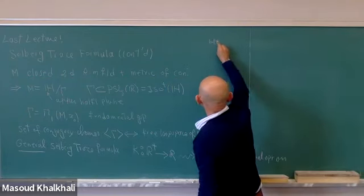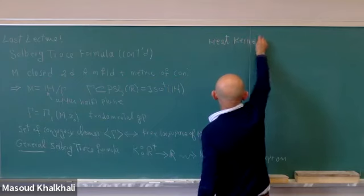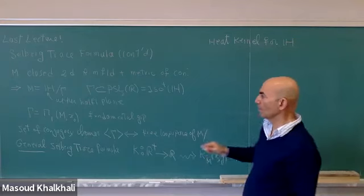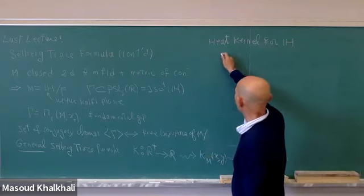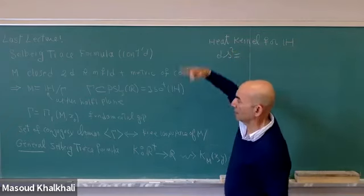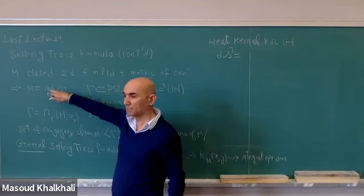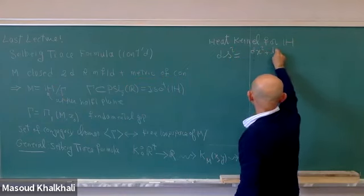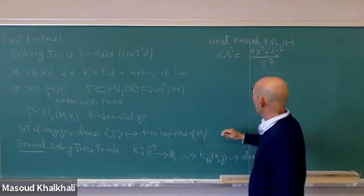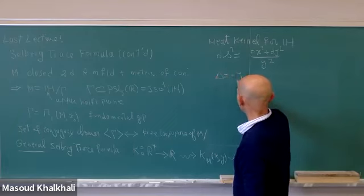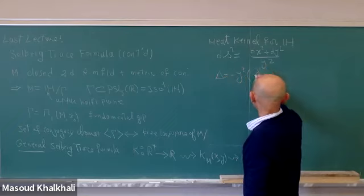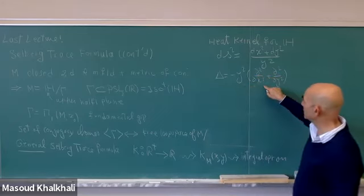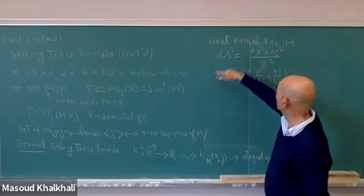The heat kernel for the upper half-plane H. The metric here is ds² = (dx² + dy²)/y², which has constant curvature minus one. The Laplacian of this metric is Δ = −y²(∂²/∂x² + ∂²/∂y²). For R^n the heat kernel, which was very important in the trace formula for the torus, was K(x, t) = (4πt)^(−n/2) · exp(−|x−y|²/4t), the famous Gaussian. But of course this does not work here, because the Laplacian is more complicated and the metric is not flat.